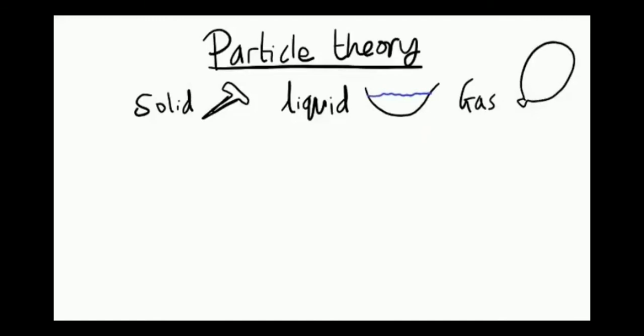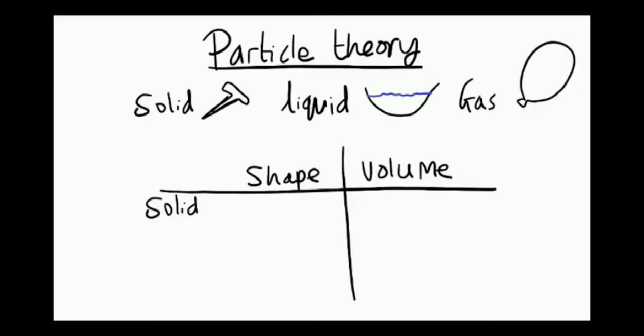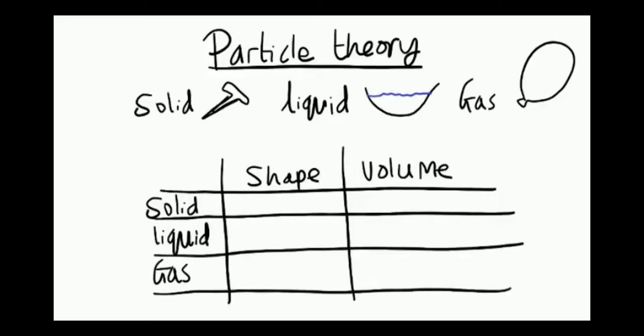Let's talk about the properties of solids, liquids and gases. Shape is the physical shape that the object has, whereas volume is the 3D space it takes up. And we're going to have a look at the shape and volume of solids, liquids and gases.